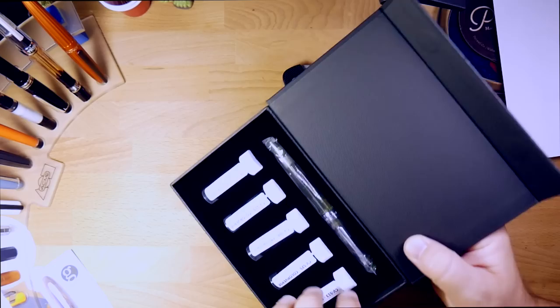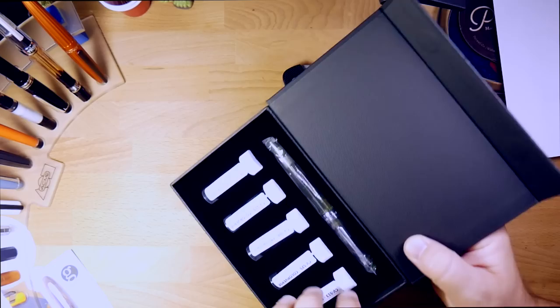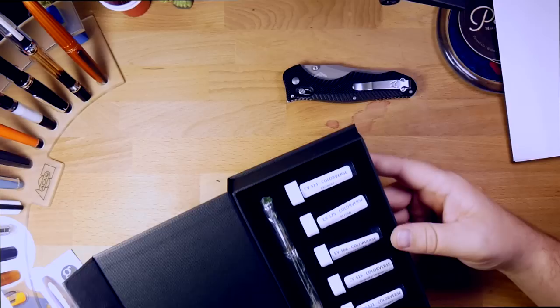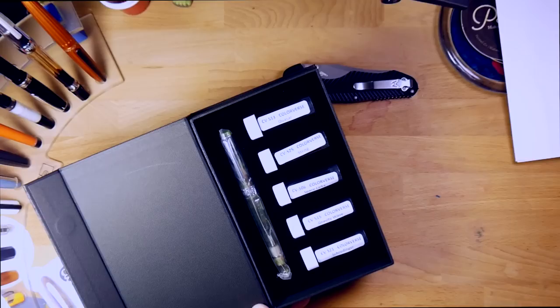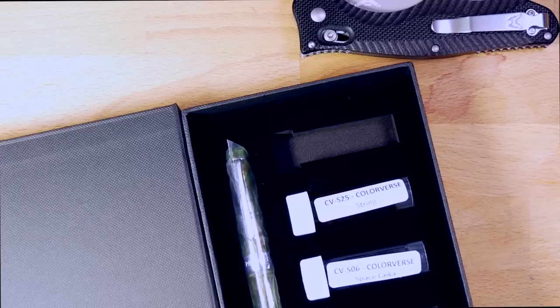All right, let's see what's in this guy right here. Dun-dun-dun! All right, we got a pen and a bunch of inks. Oh, and they're all fitted into this nice felt foam tray. That's kind of rad, actually. Nice. I want a bunch of Colorverse ink samples. Well, nobody's going to hate that. All right, let's zoom in a little bit here.